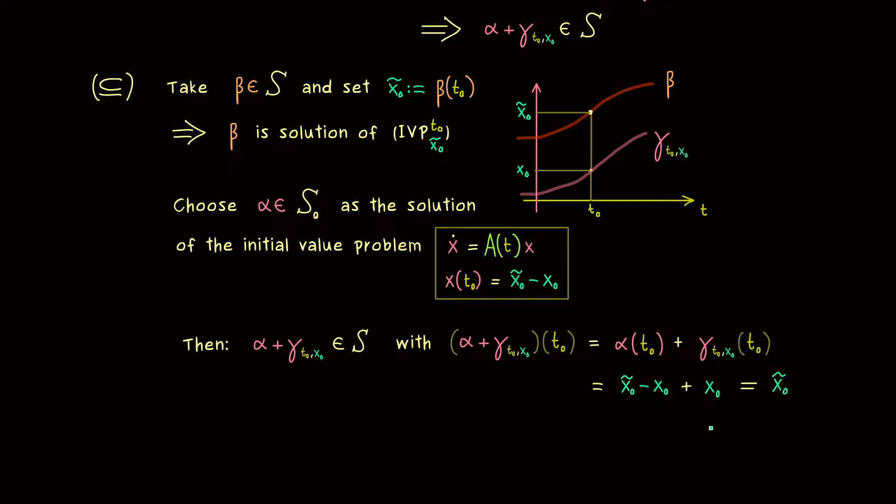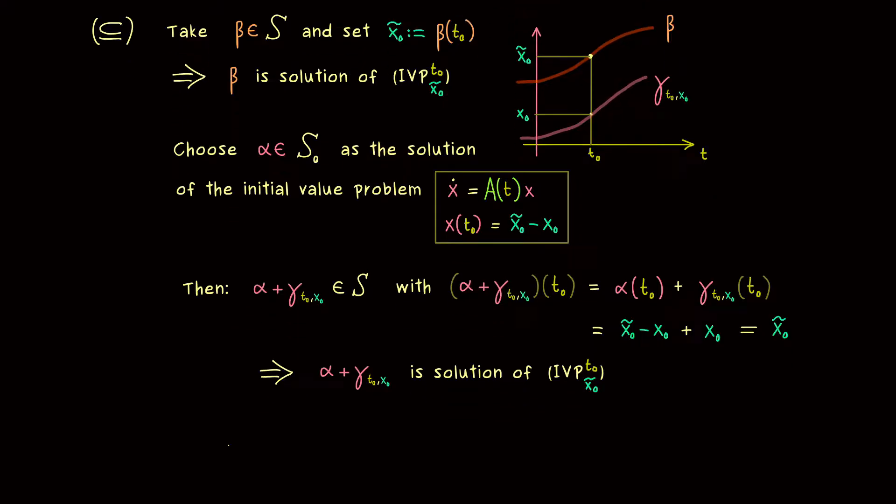So in summary what we have here is a solution of an initial value problem. Namely the one where at t₀ we have x₀ tilde as the initial value. And there we see this is the same initial value problem as we had it for beta. And there we can use the uniqueness result of Picard-Lindelöf. This beta is exactly the same function as alpha plus gamma. And that's exactly what we wanted to show. Every beta in S has the form alpha plus gamma. So the two inclusions are shown. And the equality of the sets is proven.